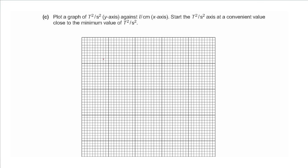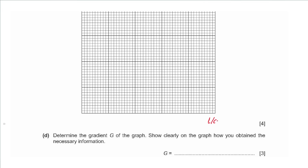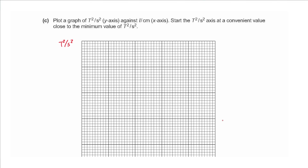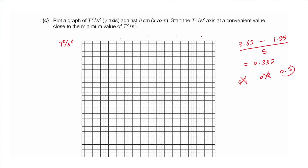Part C says plot a graph of T squared per s squared on the y-axis against L per centimeter on the x-axis. The T squared axis should start at a convenient value close to the minimum. T squared ranged from 1.99 to 3.65. Calculating the scale: maximum minus minimum over number of divisions gives 0.332, so we use a scale of 0.5, starting from 1.5.